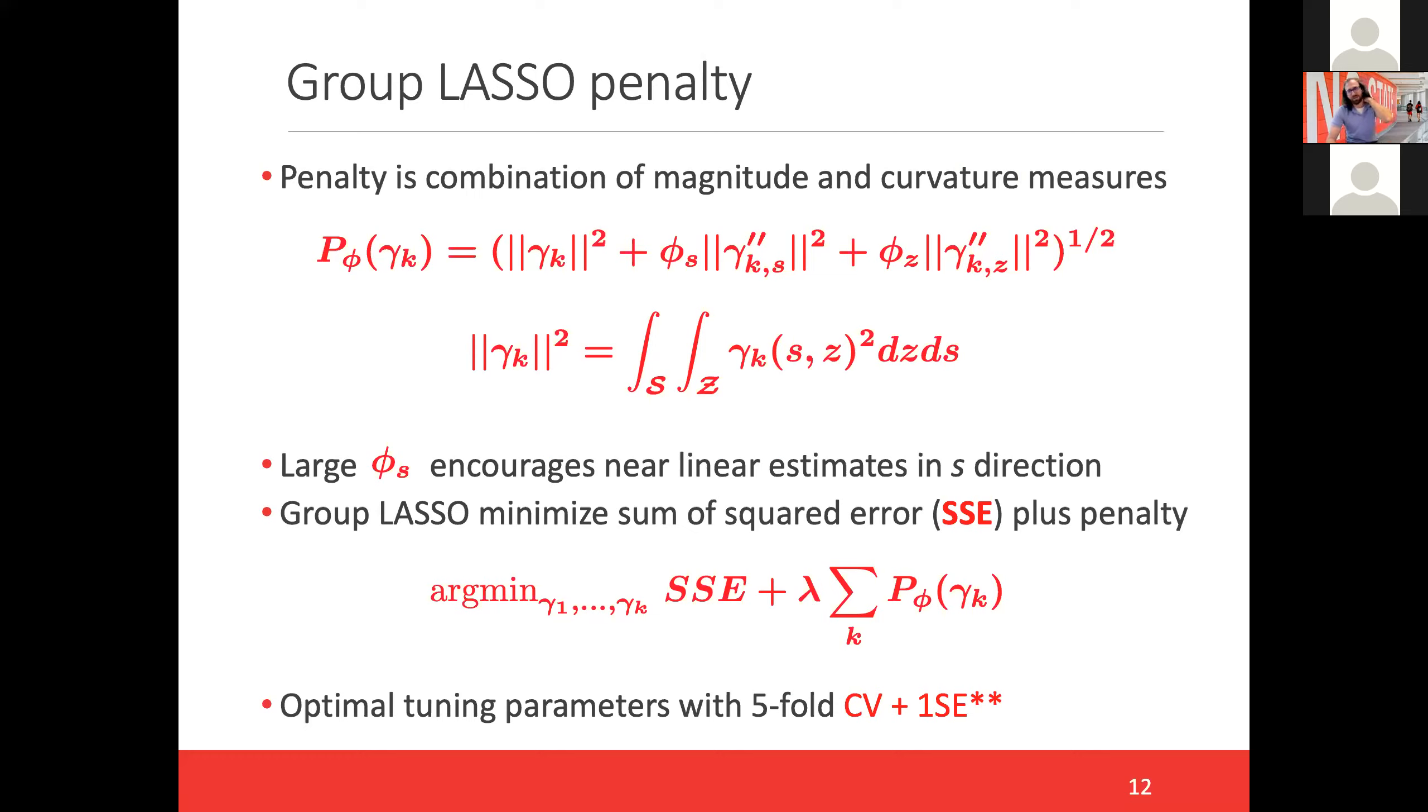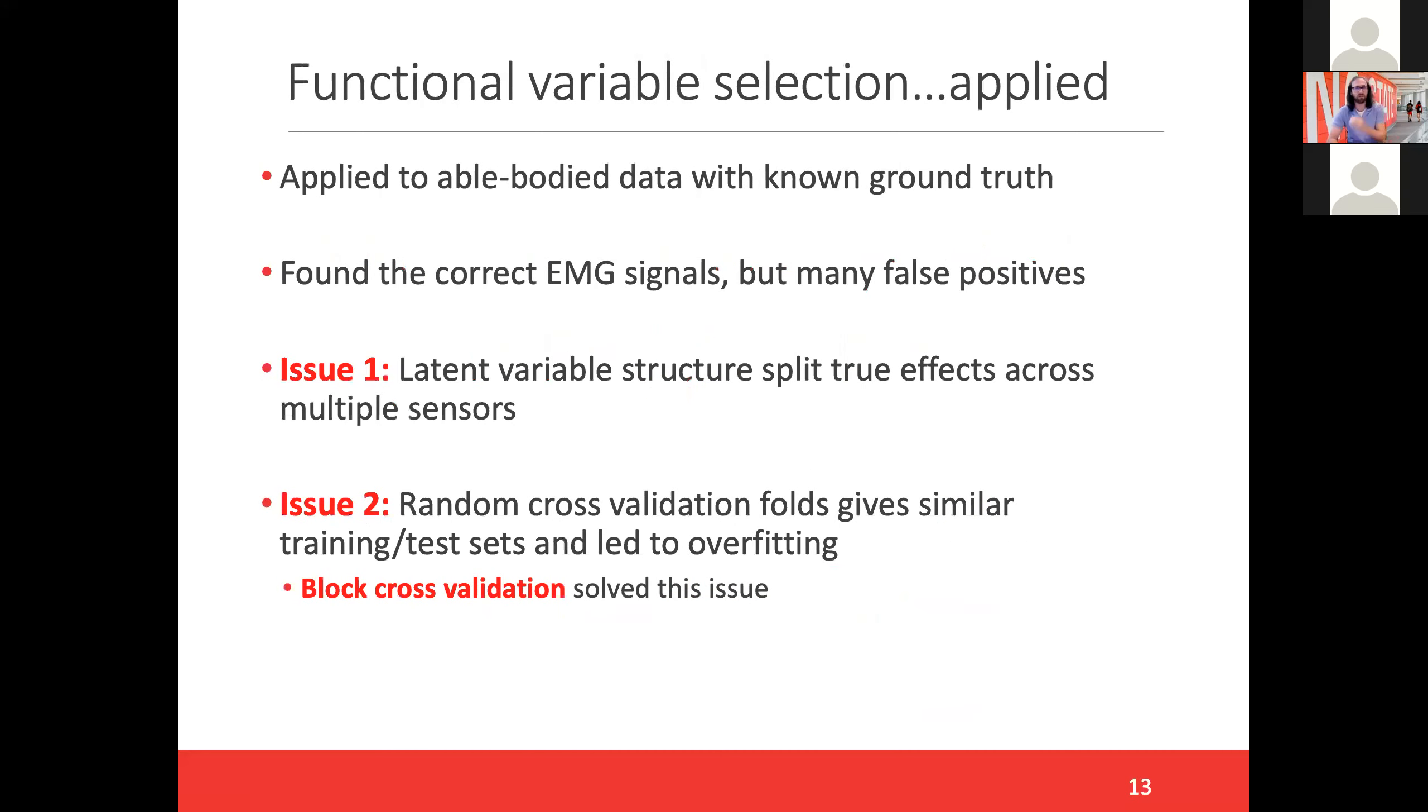We're going to have and use this penalty, extending the penalty in the Gertheis 2013 paper to two dimensions. By minimizing the sum of squared error plus this penalty, where now I have another penalty lambda intended to control the sparsity of our estimates. We have three sets of tuning parameters, so that presents a difficult tuning parameter selection problem. We did this with a five-fold cross-validation plus one standard error rule. So I have an approach at this point, and so we applied it. The nice thing about applying this to the able-bodied data is I know the ground truth. I know what I want to see happen. We found that many of the correct EMG signals were detected and were picked up, but we ended up having a lot of false positives, and we would like to cut those down as much as we can.